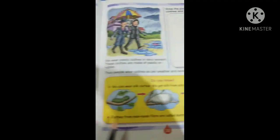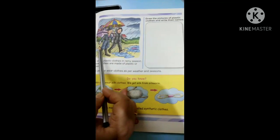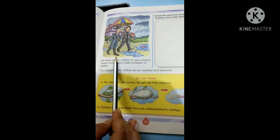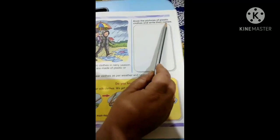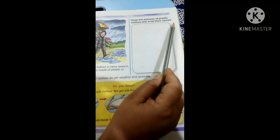Now, come to the next page. Let us read the next page loudly with correct pronunciation. Here, you can see the picture of a rainy season. So children, your today's assignment will be, you have to draw the pictures of plastic clothes and write their names.